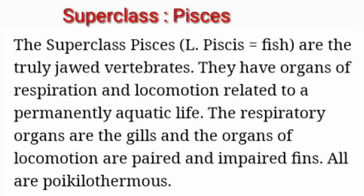Now we will discuss the first superclass — Pisces. The word Pisces is taken from Latin and means fish. They are the truly jawed vertebrates. They have organs of respiration and locomotion related to permanently aquatic life. The respiratory organs are gills, and the organs of locomotion are paired and impaired fins. All are poikilothermic, meaning cold-blooded — they cannot regulate their body temperature.